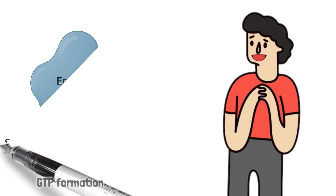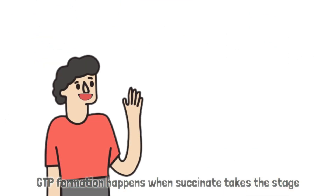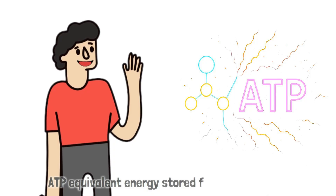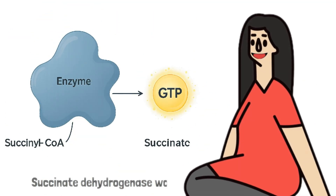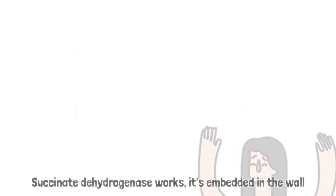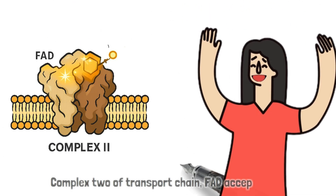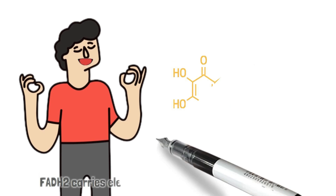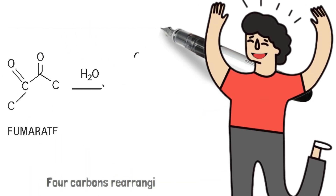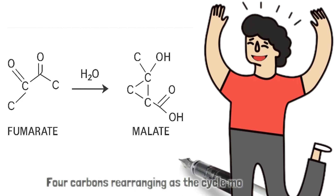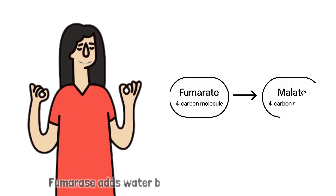GTP formation happens when succinyl-CoA takes the stage — a high-energy equivalent stored for cellular uses. Succinate dehydrogenase complex, embedded in the membrane wall, converts to fumarate — FAD accepts it all. FADH2 carries electrons, fumarate forms instead, four carbons rearranging as the cycle moves ahead.